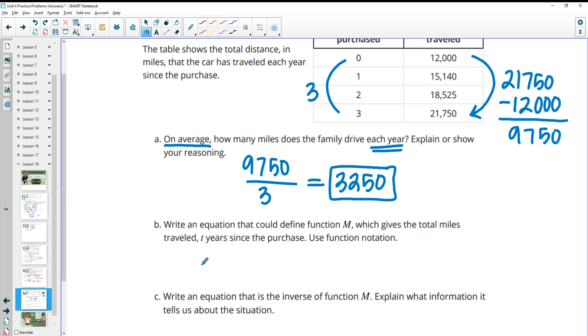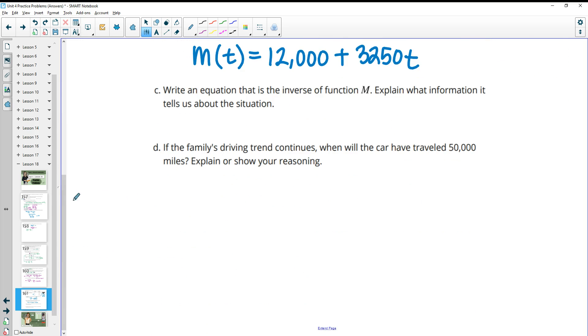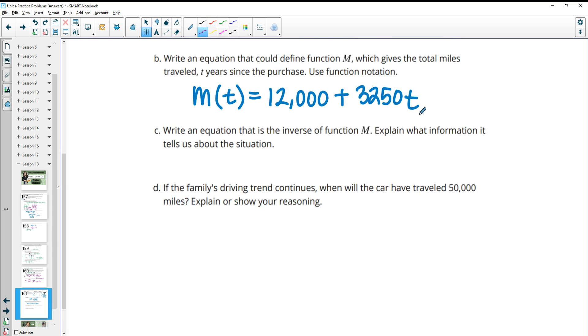Then it wants us to write an equation that could define function M, which is the miles traveled since the years it was purchased. So the miles traveled since the years it was purchased would have the 12,000 miles that it started at plus the amount that they travel per year, so 3,250 per year. Then it wants us to write the inverse of that equation. So we'll go backwards from this variable. Here's the variable multiplying by 3,250 and then adding 12,000. So we're going to want to subtract the 12,000 first, then divide by 3,250, that's going to get us the time.